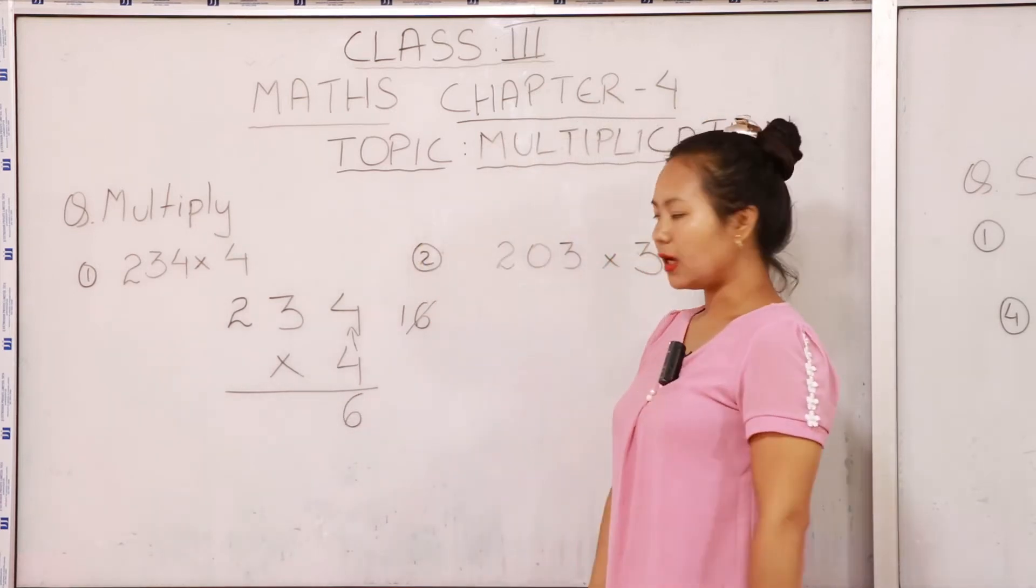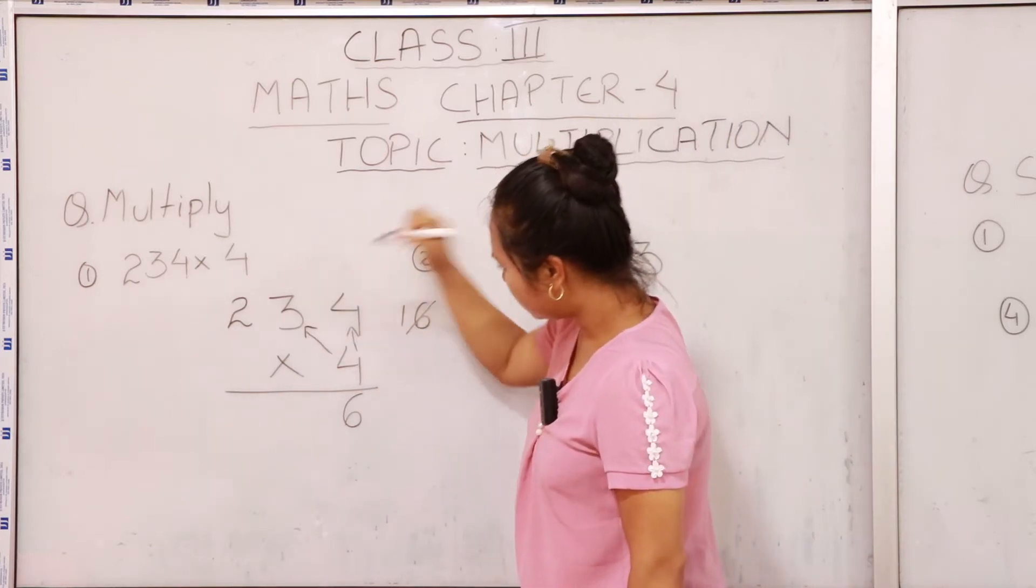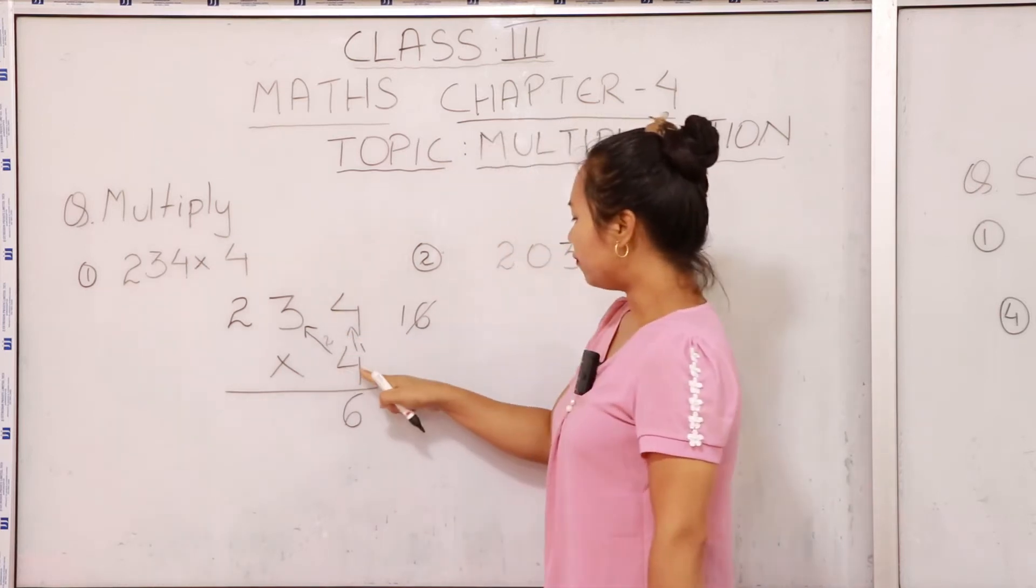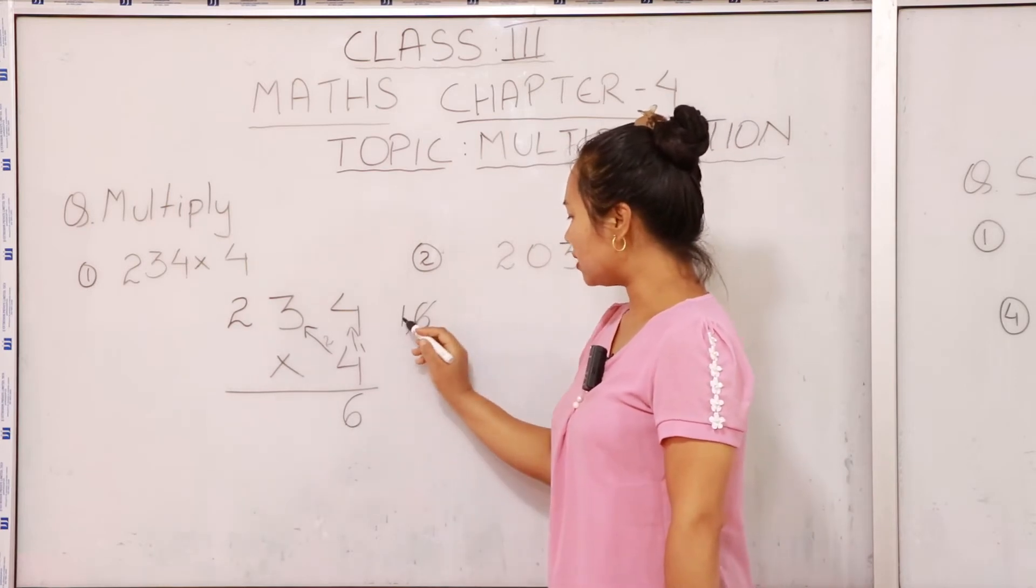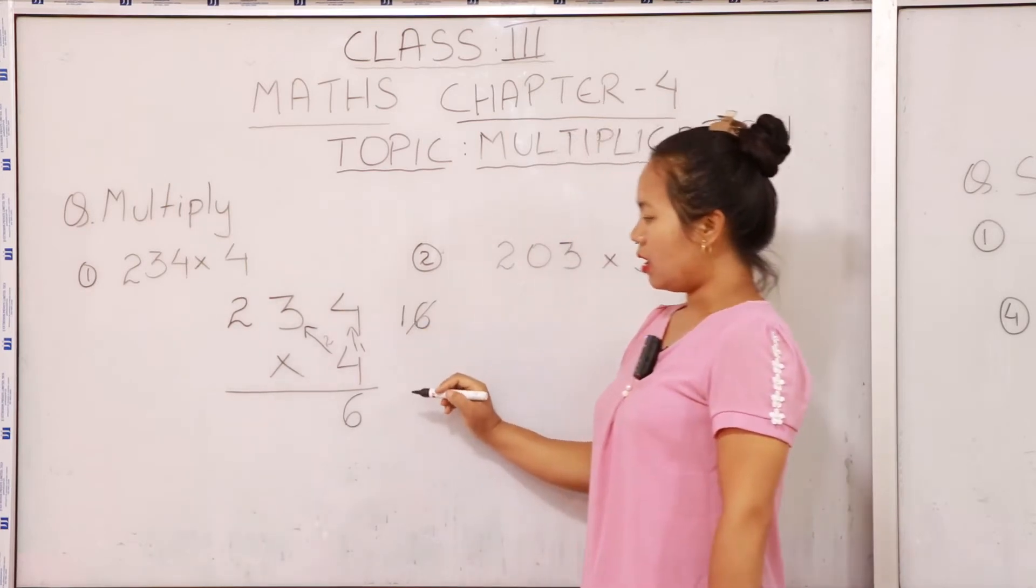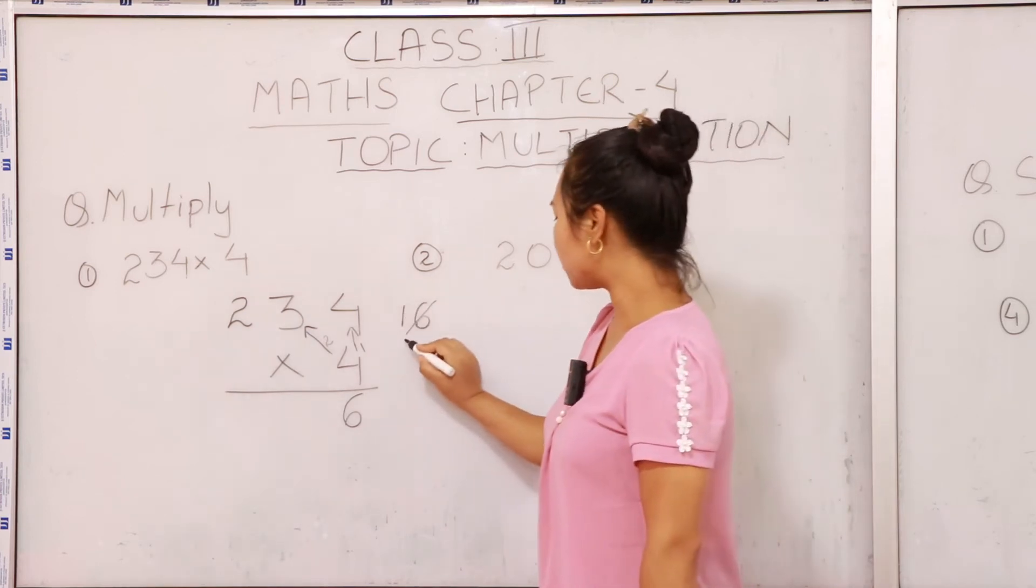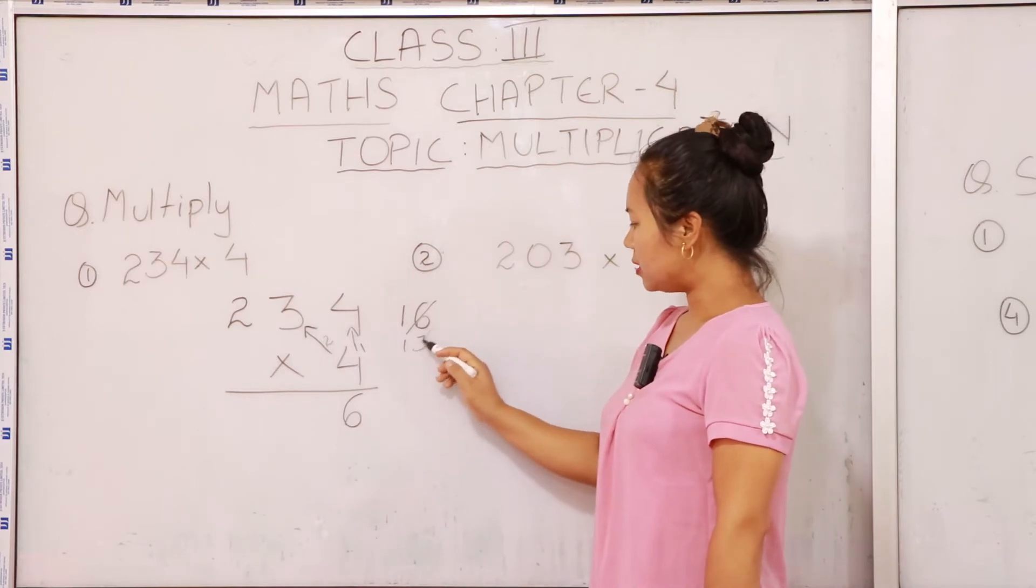Again, the second step will be with 4 and 3. This will be the second. So 4 threes are 12. Again, 12 with this one we have to add it. 4 threes are 12, 12 with this 13. So let's write down 13 here again, and we have to carry this number again.